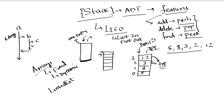When you say pop, it removes the top element — in this case 2 — and top goes back to index 2 which holds 3. If after popping you push 12, it goes back to index 3. When you say pop, it gives you the element and removes it from the stack. If you don't want to delete the element you can use peek, which at this point would give you 12.